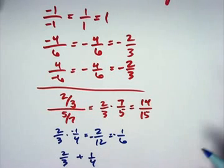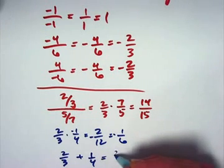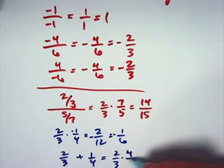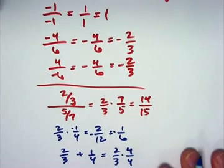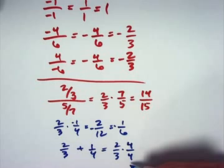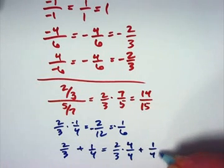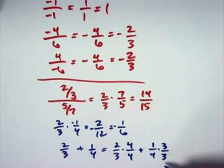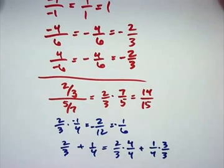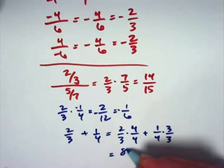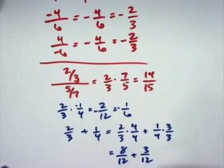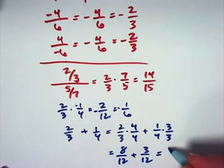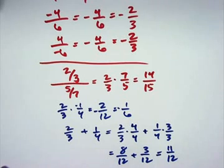The rational numbers are also closed under addition. Two-thirds plus one-fourth: we get a common denominator of 12. We can think of getting that common denominator by multiplication — two-thirds times four-fourths doesn't change the value since four-fourths is a disguised form of one, giving a denominator of 12. One-fourth times three-thirds gives a denominator of 12 as well. This converts both fractions to equivalent forms with the same denominator, and adding gives eleven-twelfths — a rational number with integer numerator and denominator.